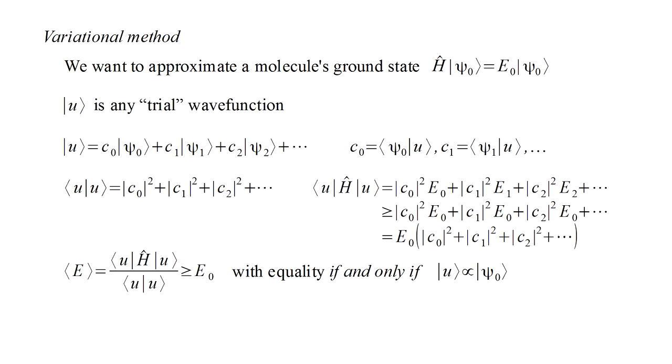Equality holds only if all the constants except C₀ are zero. Because of this, we are guaranteed that our average energy expression is greater than or equal to the ground state energy E₀, with equality if and only if our trial wave function U is proportional to the ground state wave function ψ₀.